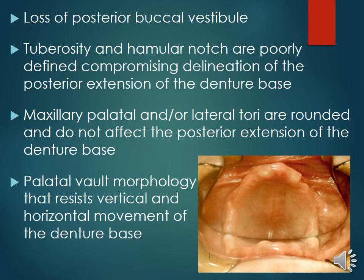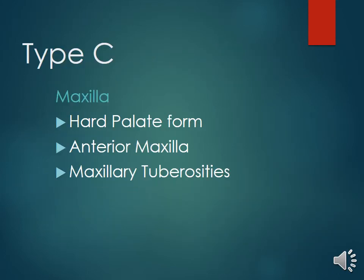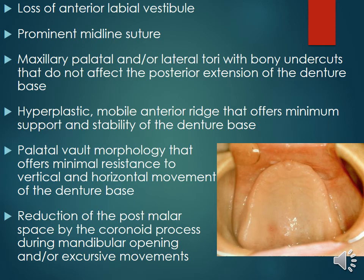In type B of the maxilla, there is loss of posterior buccal vestibule. In type C, there is loss of the anterior labial vestibule and a prominent midline suture; maxillary palatal and/or lateral tori with bony undercuts that do not affect the posterior extension of the denture base; hyperplastic mobile anterior ridge offering minimum support and stability; and reduction of the post-molar space by the coronoid process during mandibular opening or excursive movements.